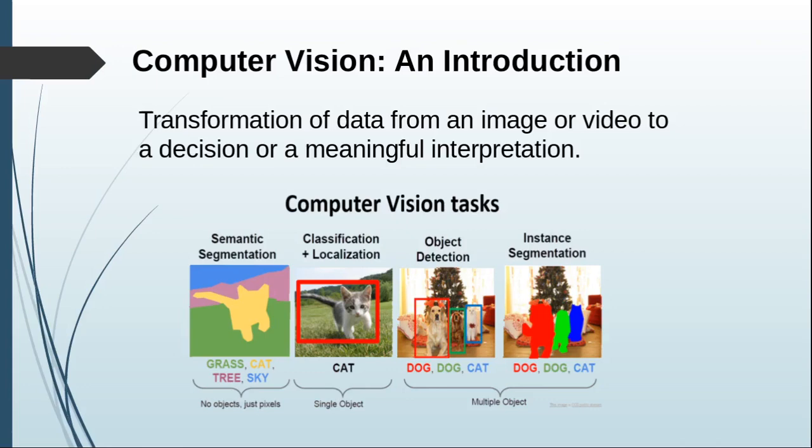Next I will talk about classification and localization. If an image of a cat is given to a human being, the human being can very quickly identify that this image belongs to a cat. But sometimes only classification is not enough — we might need to find out the exact location where the cat is located in an image. That's when we go for localization.